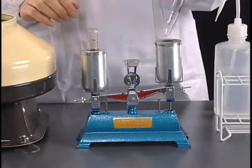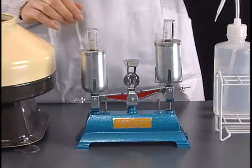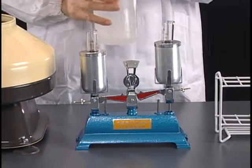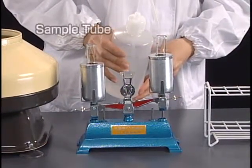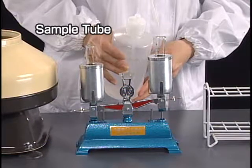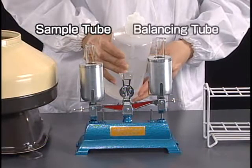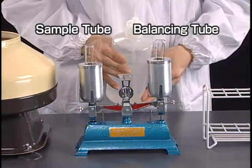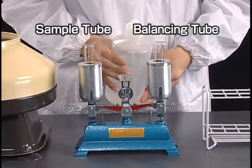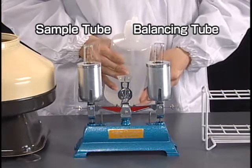Along with the sample tube, another tube is required to maintain the balance. If the weights of the two tubes are not equal, a serious accident may occur. On one side of the balance, place the centrifuge tube containing the sample and in the other place the tube for balance.